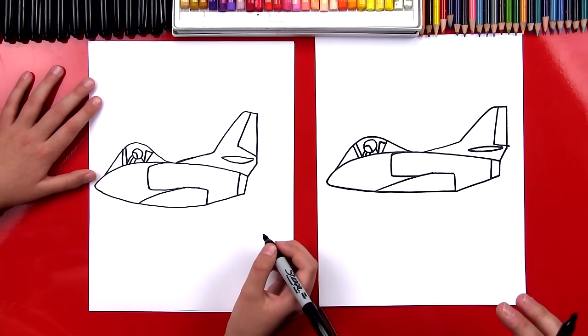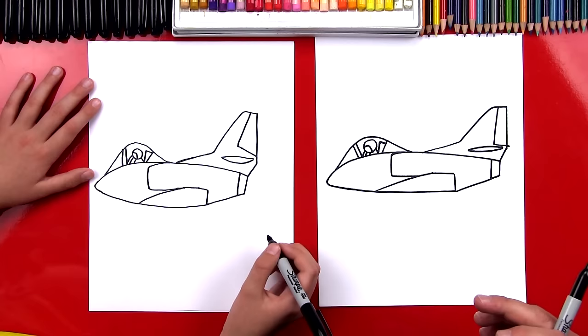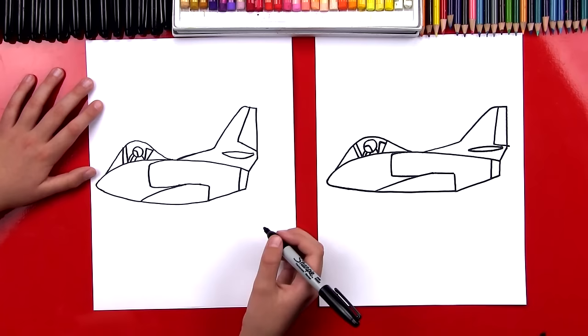And you guys can pause the video right now to add your own details. You could add missiles. What else could they add? Uh, guns. Yeah, you could add some sweet guns. You could also add stickers, you could add the wheels, you could add the landing gear. Yeah, all right, you ready to fast forward? Yeah, okay, let's do it right now.